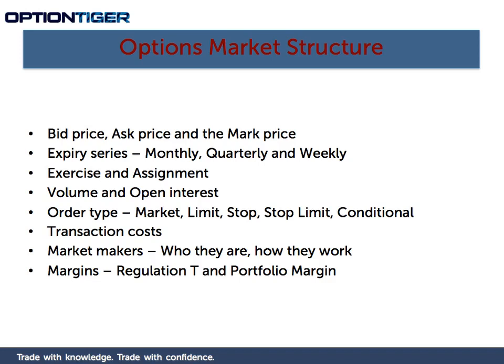You always want to put in a limit order. If you're buying an option and the bid-ask prices are $8.00 and $8.20, you want to put in a limit order and say you want to pay no more than $8.00 or $8.05. You want to make sure your entry point is something you control, not something handed down by your broker. Never use a market order unless there's a very good reason.